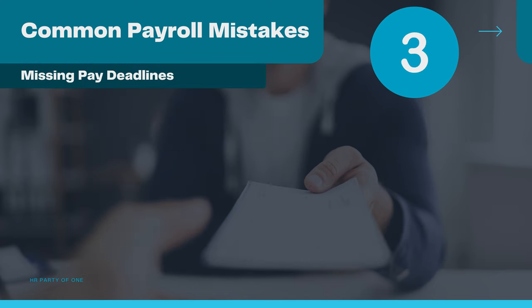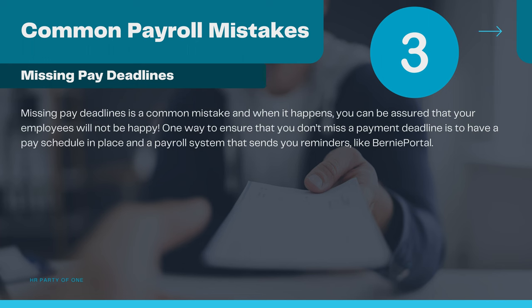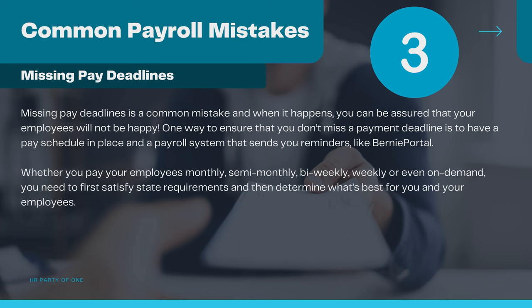Number three: missing pay deadlines. Missing pay deadlines is a common mistake, and when it happens, you can be assured that your employees will not be happy. One way to ensure that you don't miss a payment deadline is to have a pay schedule in place and a payroll system that sends you reminders, like BerniePortal. Whether you pay your employees monthly, semi-monthly, bi-weekly, weekly, or even on demand, you need to first satisfy state requirements and then determine what's best for you and your employees.